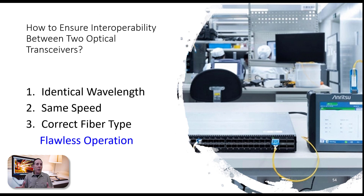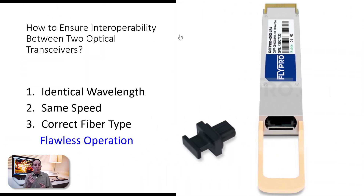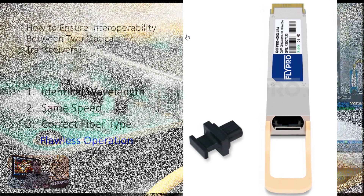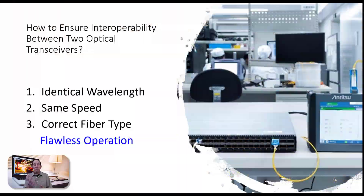Once you've read your manual and you know what kind of optical transceiver your switch or optical converter will use, all you have to do is match the wavelength, the speed type, and the correct fiber type. If you get those three things correct, you will have complete compatibility.